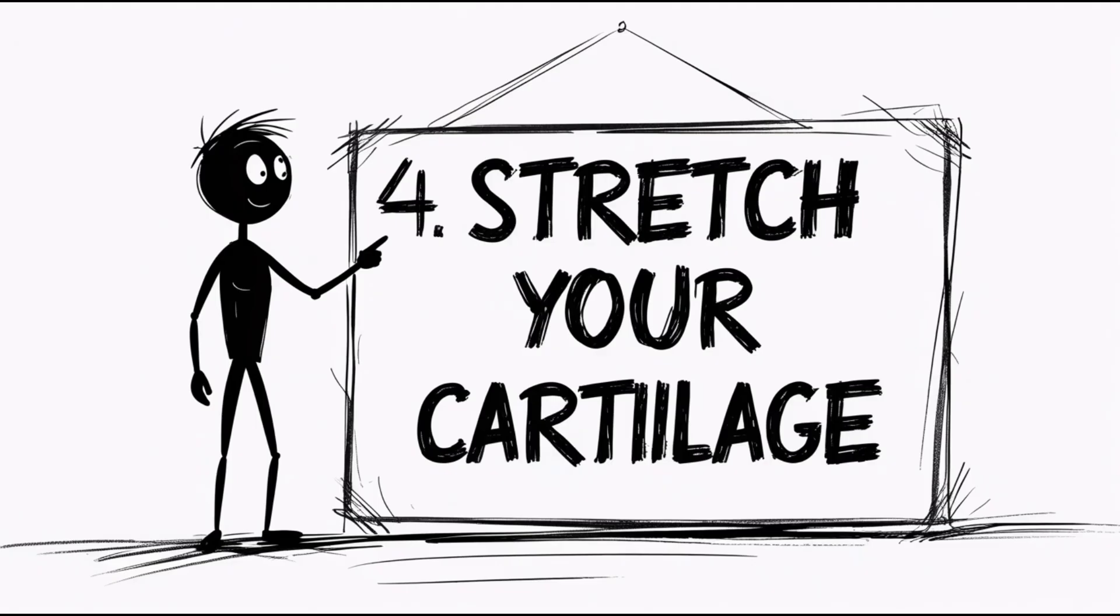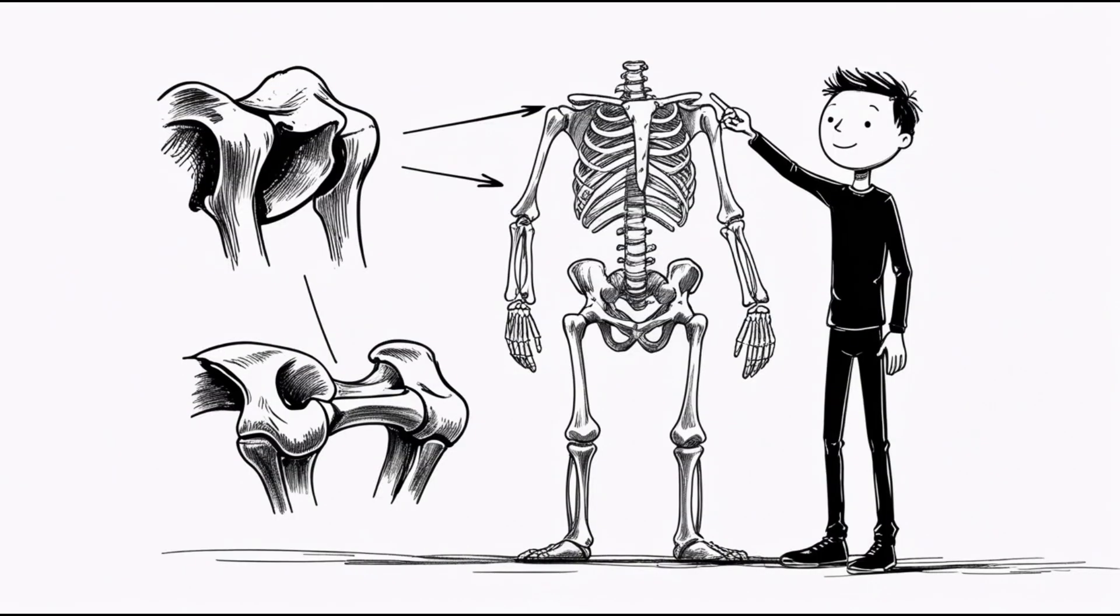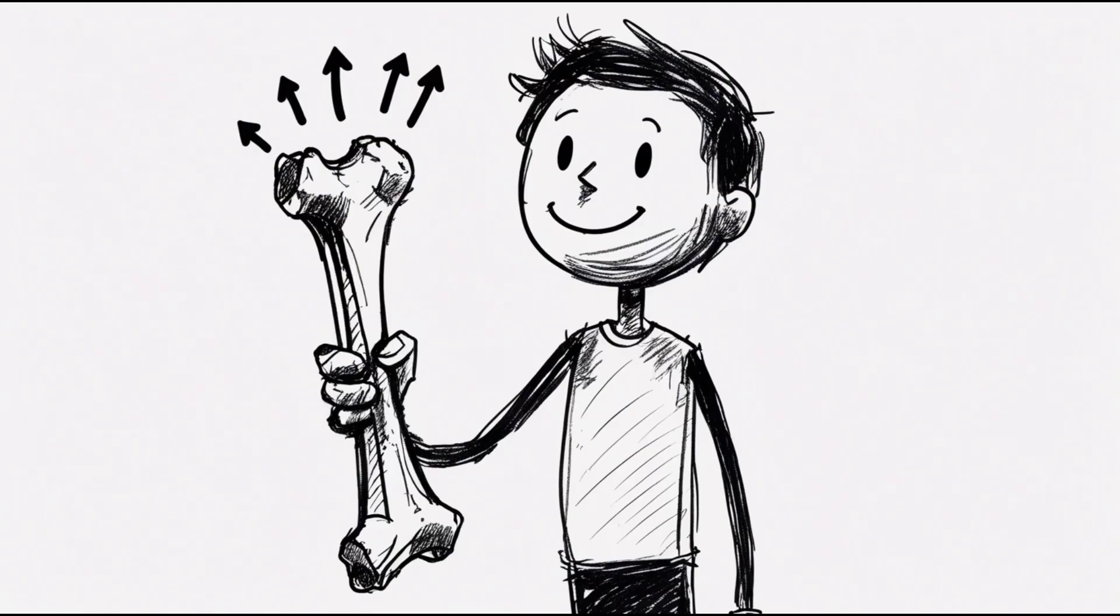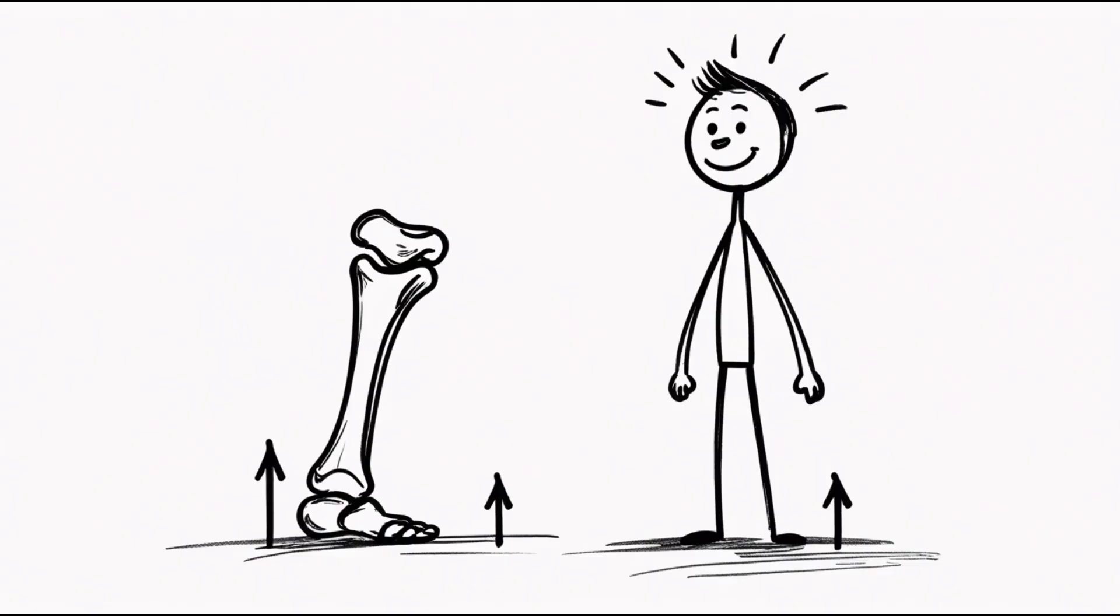Four. Stretch your cartilage. Most people forget your bones aren't the only thing that affects height. Between every bone is cartilage, flexible, spongy tissue that acts like a cushion. And here's the secret. Cartilage can thicken with proper stimulation. That means more space between your joints. And yes, more height.